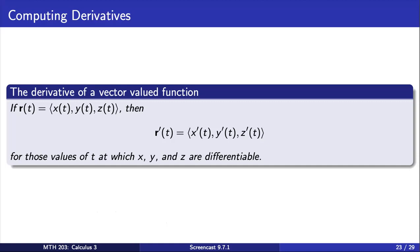The derivative of r then equals a new vector, r prime of t, with components x prime of t, y prime of t, and z prime of t. All of the derivative rules from calculus 1 can be applied when taking derivatives of the components of r.